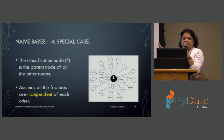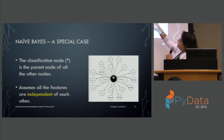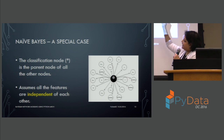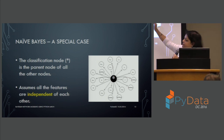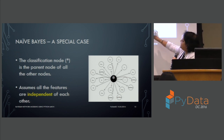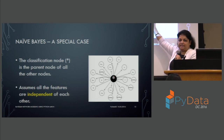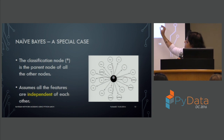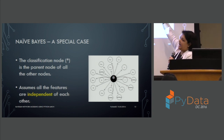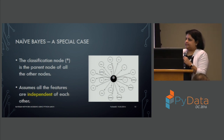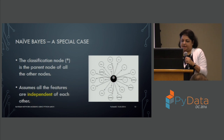Naive Bayes is a special case of the Bayesian network where the element you are predicting is the parent node and it depends on all other features, but there is no interrelationship between the other attributes — the most simple form of a Bayesian network. In full Bayesian networks, attributes can have relationships with each other through different algorithms, which increases the complexity and the kinds of problems the network can handle.